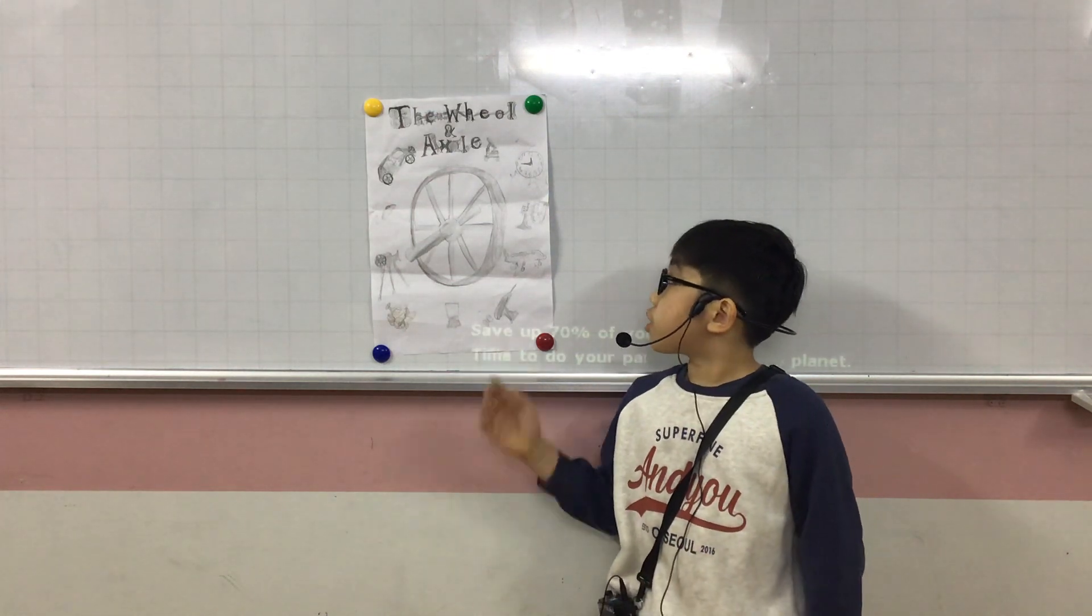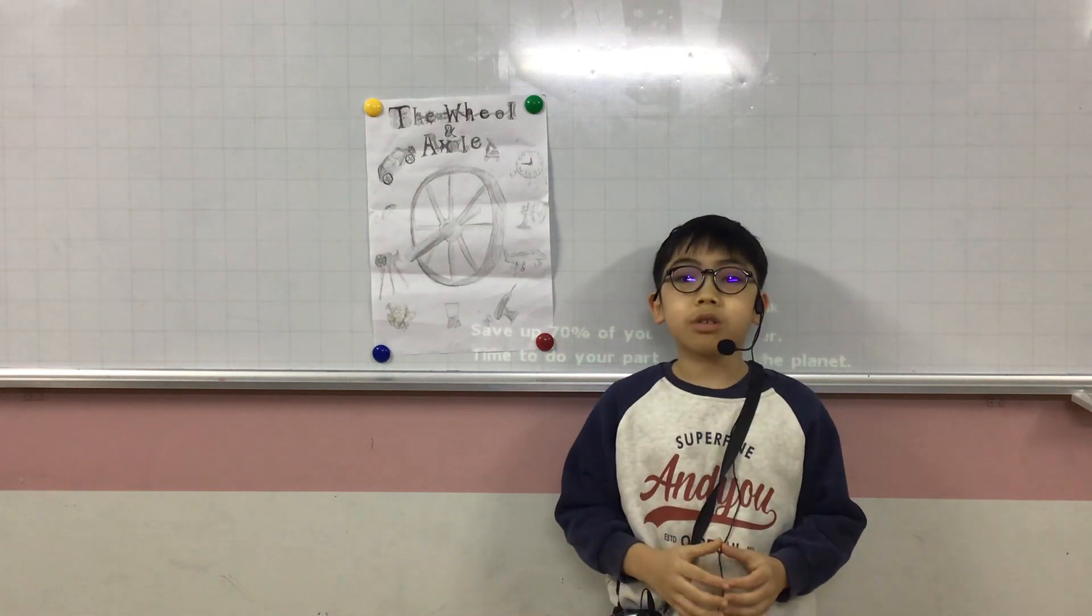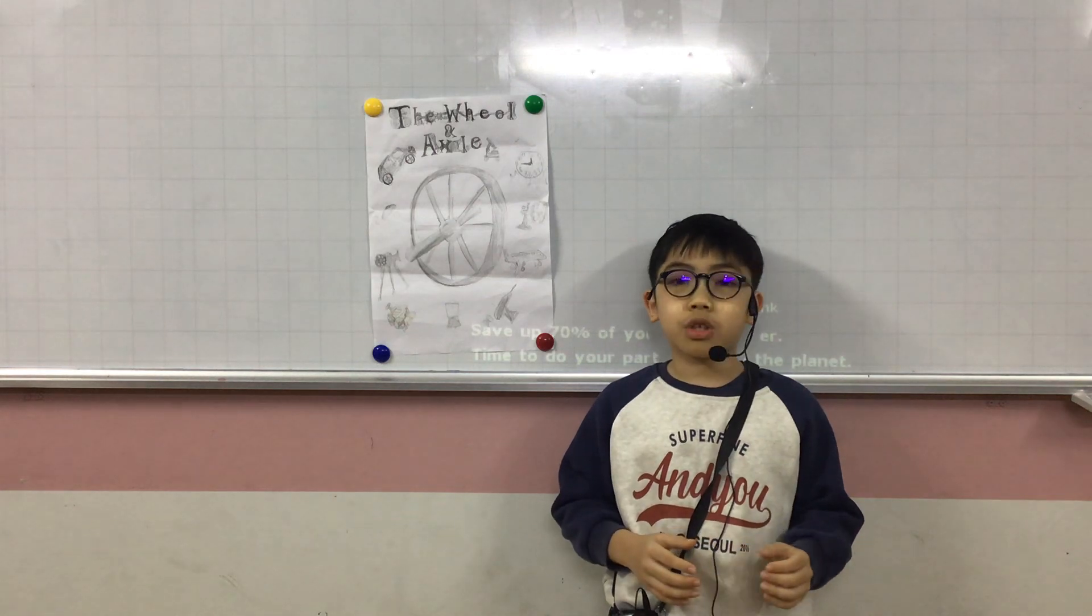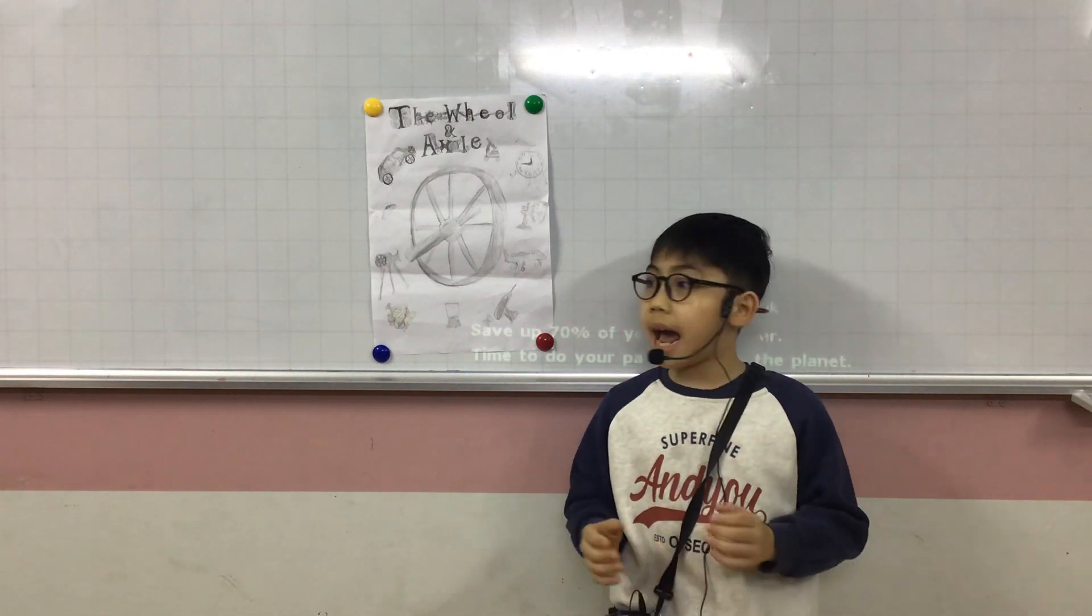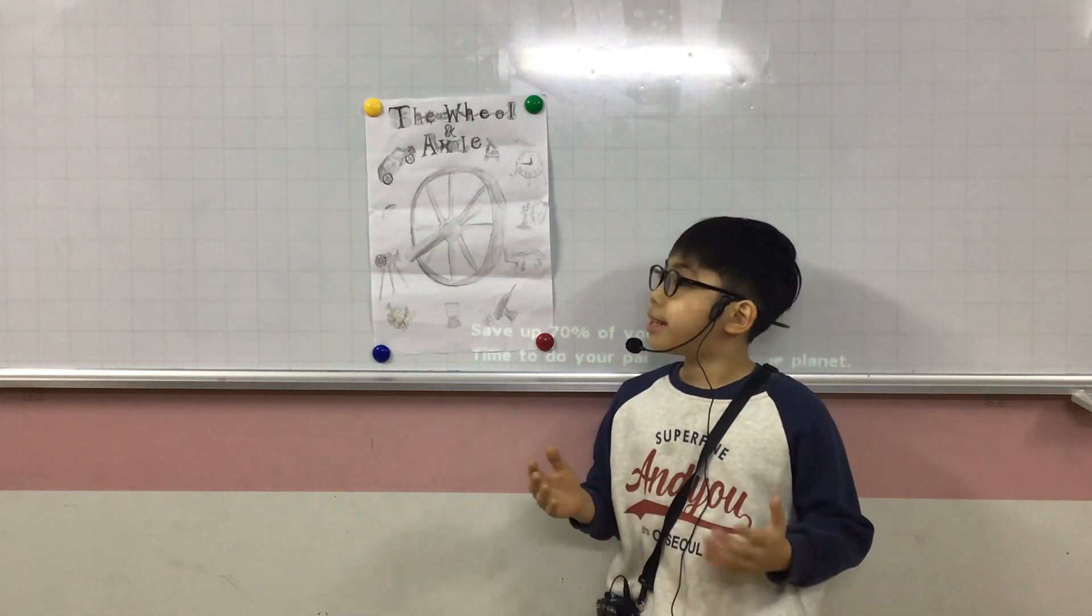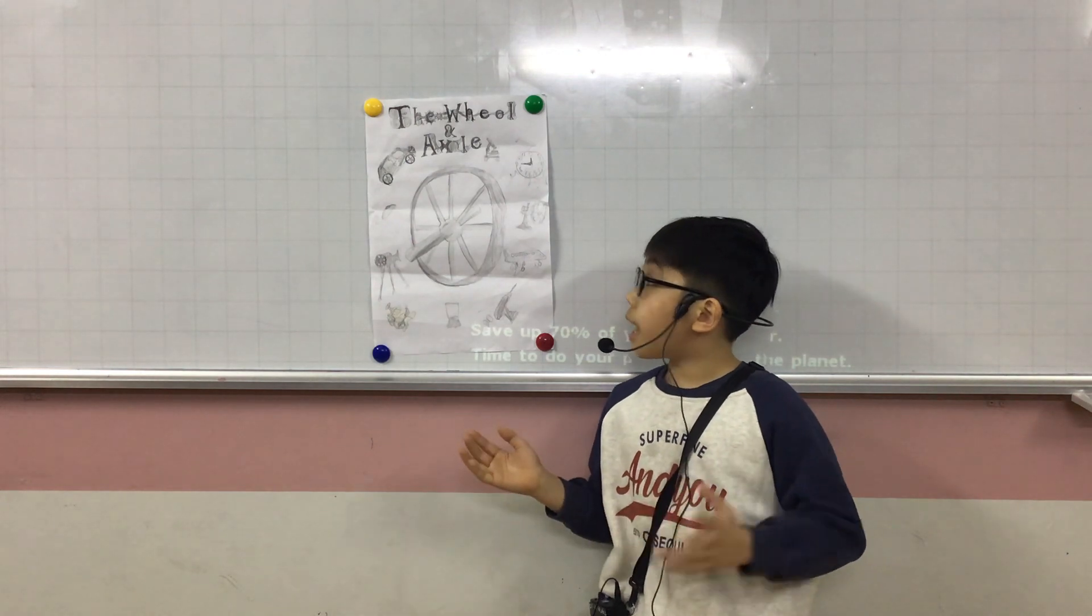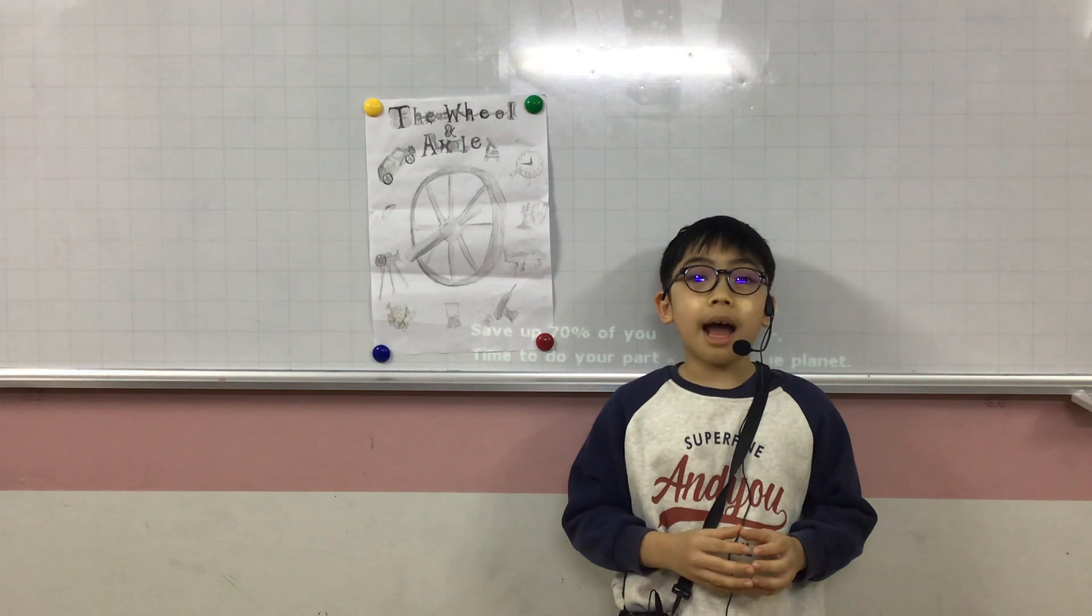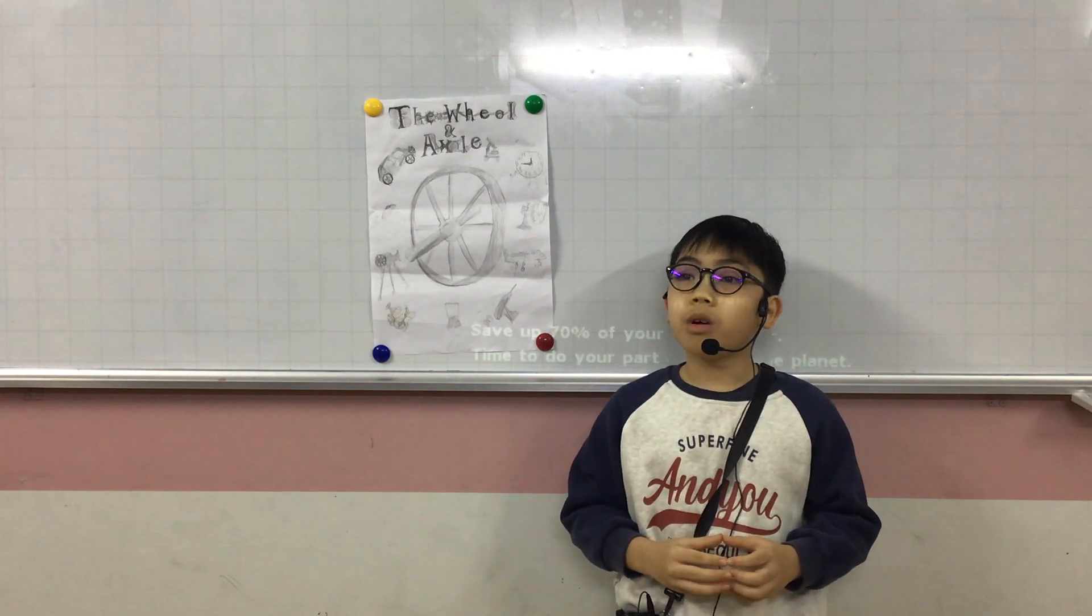The origins of the wheel and axle is at the year 6000 to 6125 B.C. The Sumerian people made the wheel and axle. The wheel was a wooden disc and the axle was a tube-like axle.